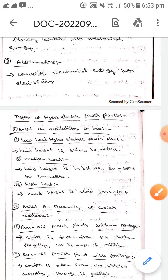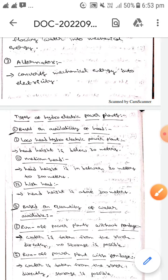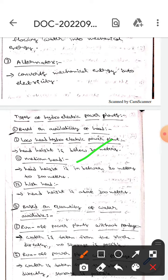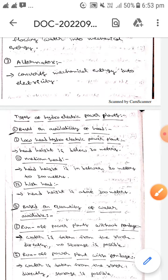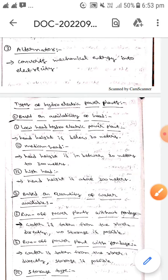The first classification is based on availability of head. Low head hydraulic power plants have a head height below 30 meters. Medium head plants have a head height between 30 to 300 meters. High head plants have a head height above 300 meters.